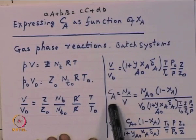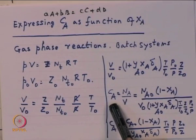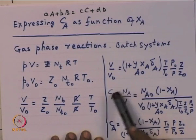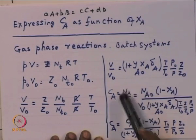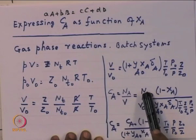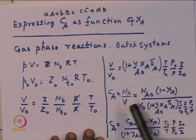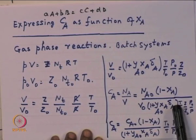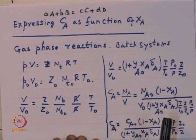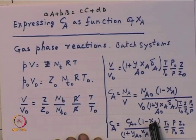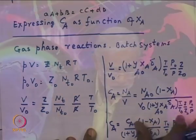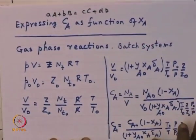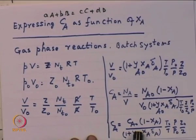Concentration C_A is N_A divided by V. Since N_A = N_{A0}(1 - X_A) and V comes from the above equation as V_0 times (1 + y_{A0} * X_A * delta_A) times (T/T_0) * (Z/Z_0) * (P_0/P), we can express concentration in terms of conversion X_A. Similarly, we can do the same for components B, C, and D, allowing us to express the reaction rate function in terms of conversion.